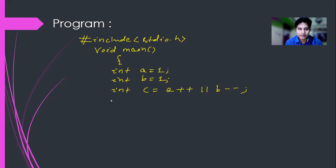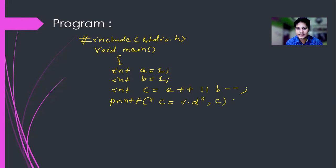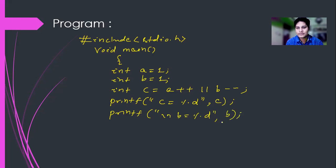So let's see how it is working. After that I'm writing a printf function to display the value of c and the value of b. I want to display c as: printf("c = %d", c); and in the next statement printf("\nb = %d", b);.